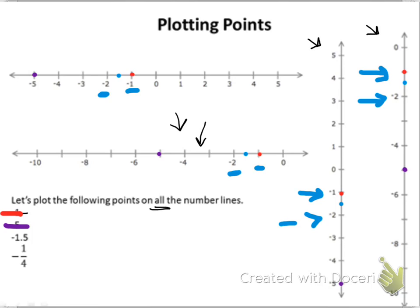The decimals seemed nerve-wracking, but it actually wasn't too bad. Now, what about negative 1 fourth, or negative 1 quarter? When I think of negative 1 quarter, I know that that is 1 fourth of the way between 0 and negative 1 — 1 fourth because this fraction means it's divided into 4. So if I look at my 0 and then my negative 1, negative 1 fourth has to be a quarter of the way. A half will be right here, so a quarter will be about right there. So that means negative 1 fourth is right there on my number line.